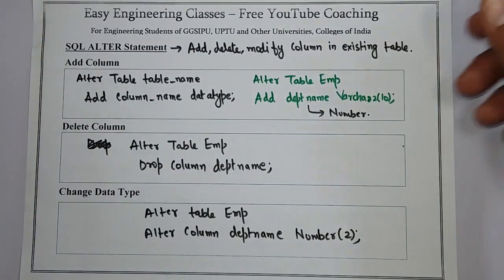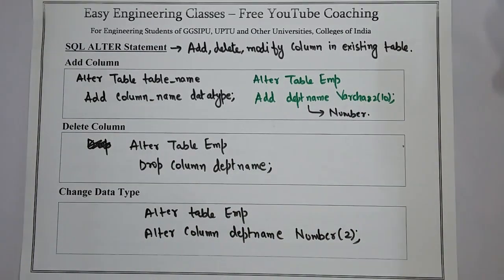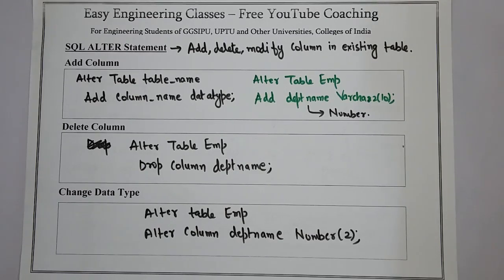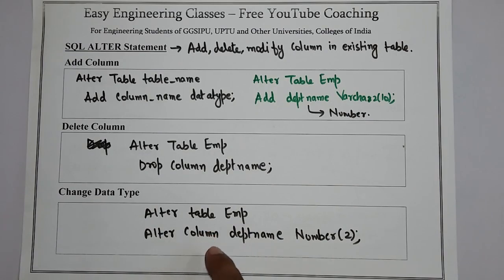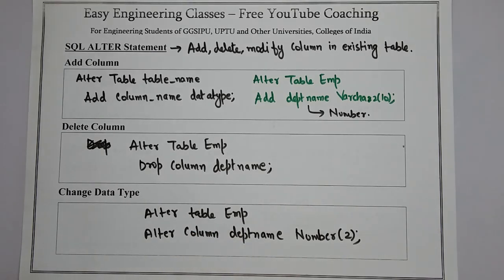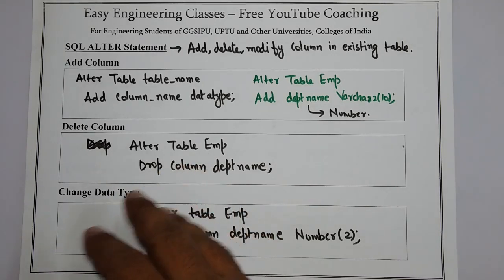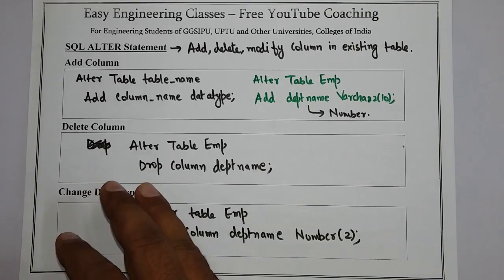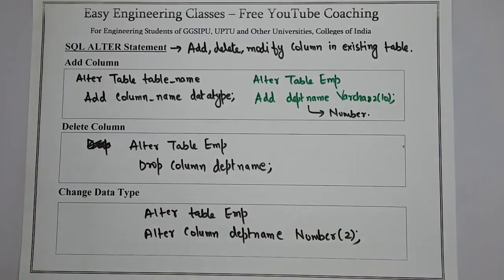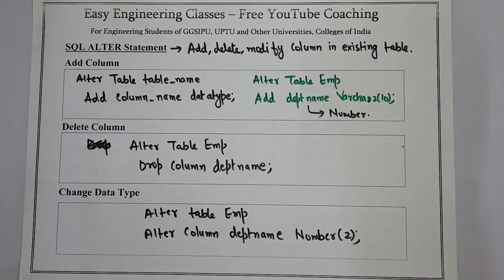There must be some precautions while using the SQL ALTER statement. If there are values in a column — for example, department_name has string or character values — and you suddenly change it to number, then the chances of error will increase. Similarly, if you are dropping a column that serves as a primary key or foreign key, you cannot simply drop it, as it will affect the relationship between tables. So it is important to use SQL ALTER statements only when necessary, and while using them, ensure that the relationships between tables are not disturbed.